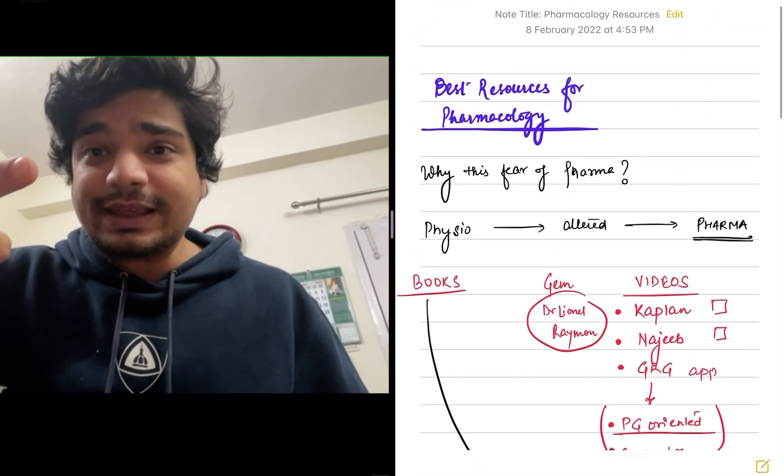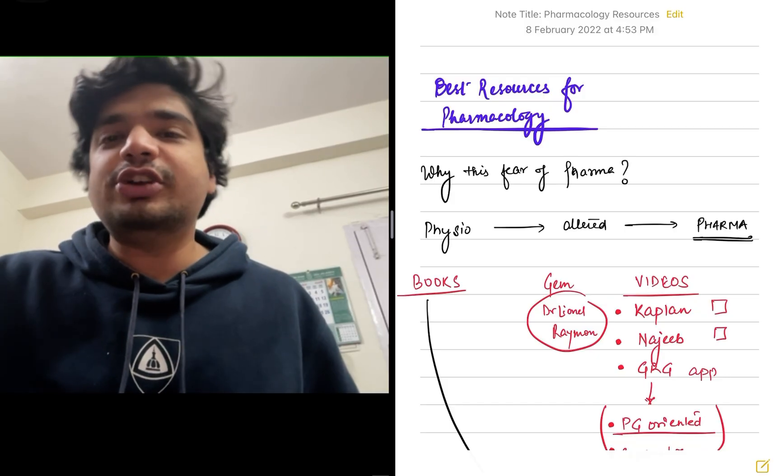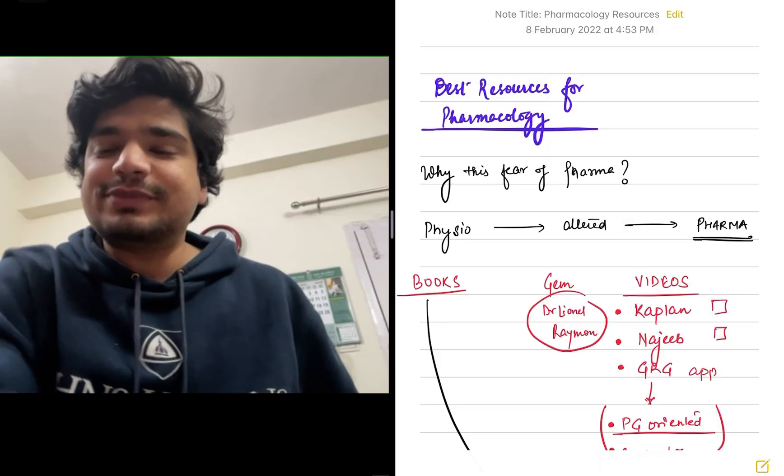So this is my way of how do you study for Pharmacology. First Kaplan, then read KDT, GRG notes and practice MCQs again from GRG or if you want to go for a clinical resource, pretest is the best one. Thank you and have a nice day.